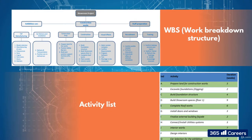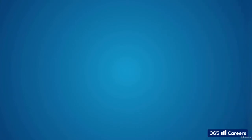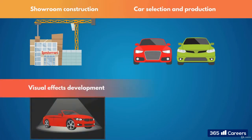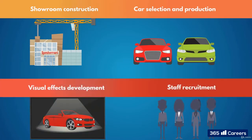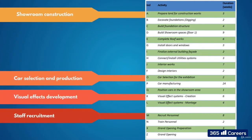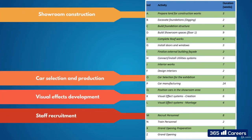We have our four work streams: showroom construction, car selection and production, visual effects development, and staff recruitment and preparation. Each stream can be executed in parallel, starting with A, O, K, and M respectively.